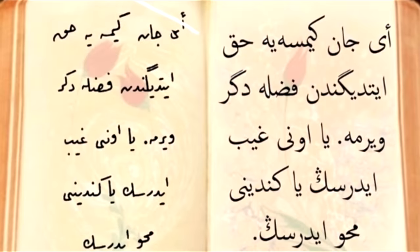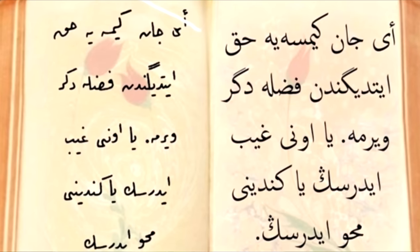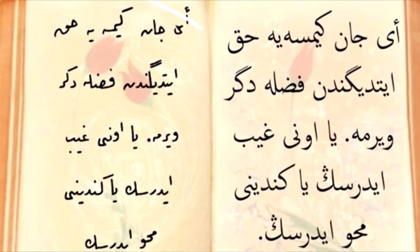Ottoman Turkish was based on Turkish grammar, with some influence from Persian and Arabic grammar, but it was the vocabulary that was most influenced — sometimes up to 88% of the vocabulary used was Persian and Arabic. This was the language of the elite people, not the language of the common people, which had much less foreign influence, although it did still have some.